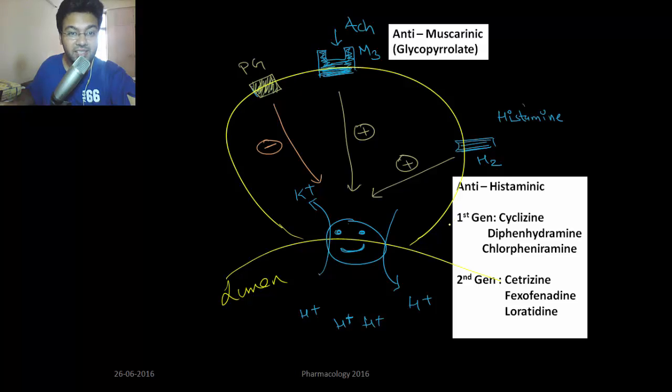Please don't give for a long time because it might cause CNS depression. Cyclizine is also one of the first generation antihistamines, and chlorpheniramine. All of these produce sedating effect. First generation antihistamines also have anti-muscarinic property, so they could be used in motion sickness.